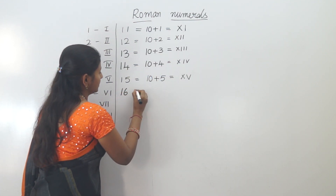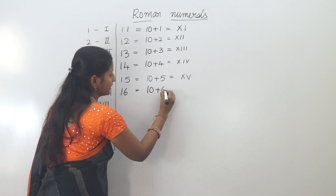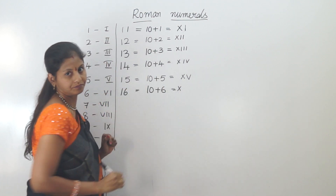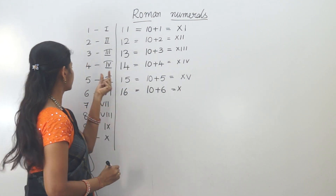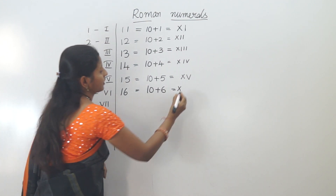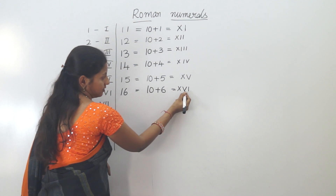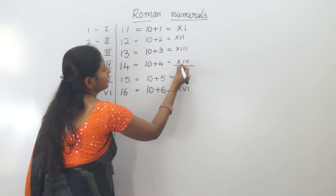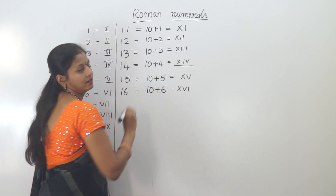For 16: 10 plus 6. Ten is X. Six means 5 plus 1. So 10 plus 5 is 15, and 15 plus 1 is 16. We write X, V, I — XVI.